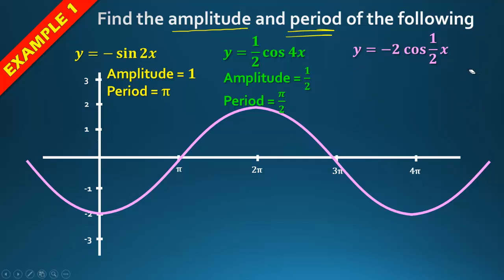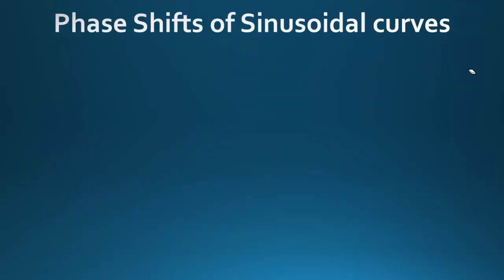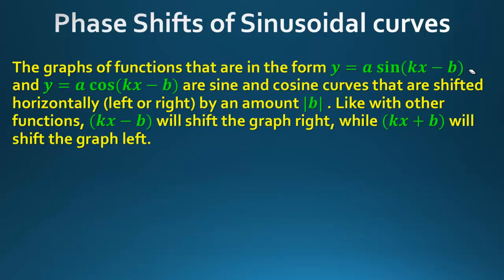Amplitude is 2 — remember, amplitude is always positive. Period is 4π. Now let's talk about phase shifts. The graphs of y = a·sin(kx – b) and y = a·cos(kx – b) are sine and cosine curves shifted horizontally left or right by |b|.